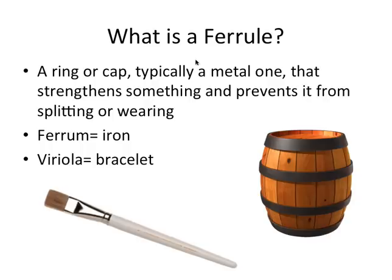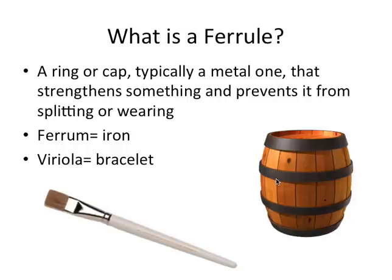So what is a ferrule? It's defined as a ring or cap, typically a metal one, that strengthens something and prevents it from splitting or wearing. This word comes from a combination of Latin words — ferrum for iron and viriola for bracelet — so it's technically an iron band that encircles something to give it strength. An example would be the little metal piece at the end of a paintbrush that reinforces the bristles, or the iron rings around a barrel that help give it strength and support.